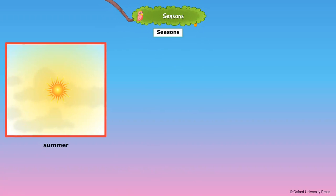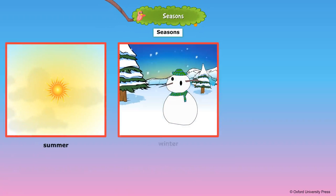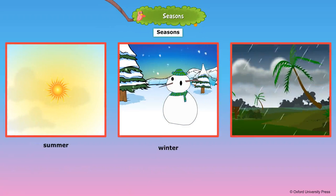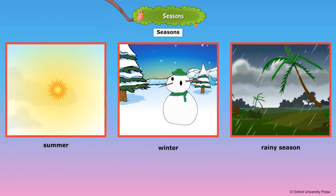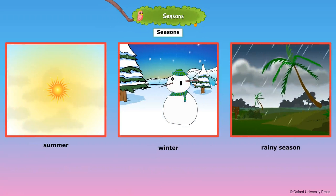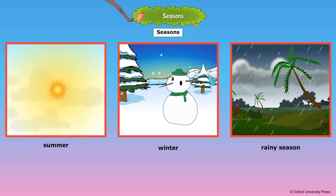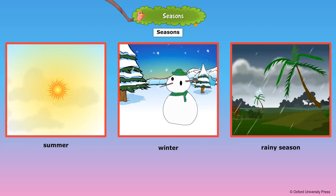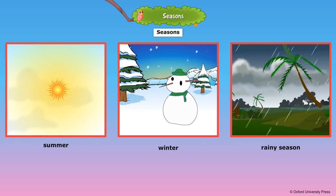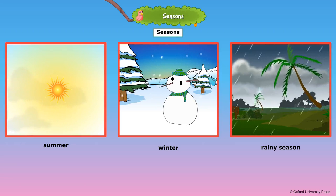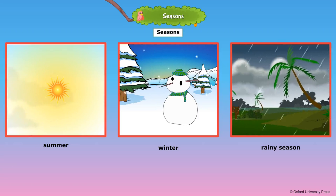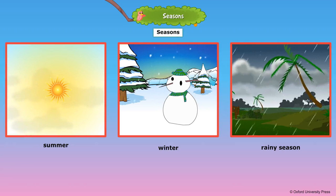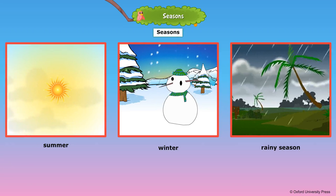When the weather remains the same for a long period of time, it is called a season. In India, we have three main seasons: summer, winter, and the rainy season. In summer it is very hot, in winter it is very cold, and in the rainy season it rains.